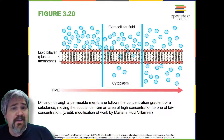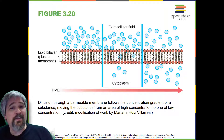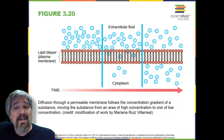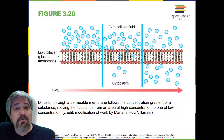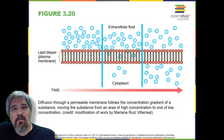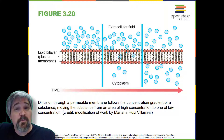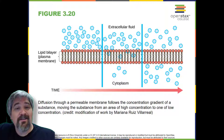Diffusion is a passive process of transport. A single substance tends to move from an area of high concentration to an area of low concentration until the concentration is equal across the space. You are familiar with diffusion of substances through the air. For example, think about someone opening a bottle of perfume in a room filled with people. The perfume is at its highest concentration in the bottle and is at its lowest concentration at the edges of the room. The perfume vapor will diffuse or spread away from the bottle and gradually more and more people will smell the perfume as it spreads.